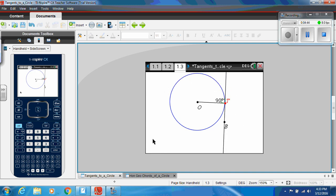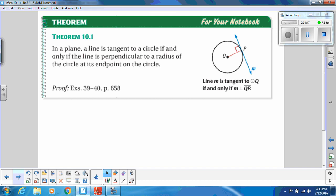So that's the next thing we need to do right in our notes, is that if we have a line tangent to a circle, it has to be perpendicular to the radius of the circle at the endpoint here, at point P. So make sure if you need to pause that to write that down, please do so.